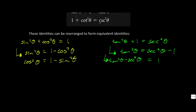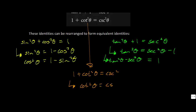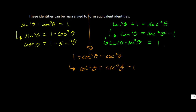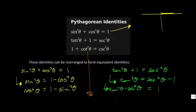The last one: 1 plus cotangent squared theta equals cosecant squared theta. Rearranging for cotangent squared theta gives cosecant squared theta minus 1. Or isolating the 1 gives 1 equals cosecant squared theta minus cotangent squared theta. If you see any of those variations, they all come back to these three core identities, so make sure you're comfortable with that.